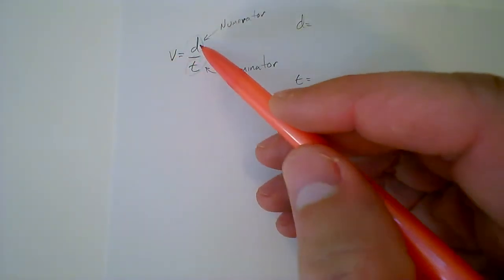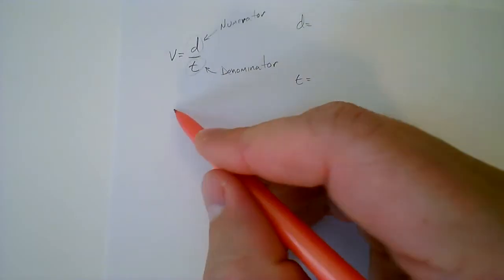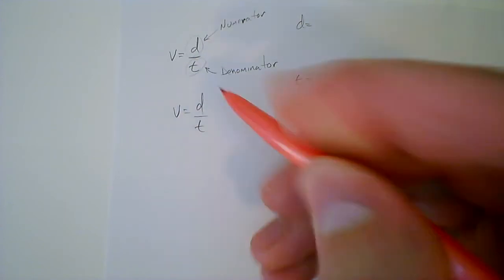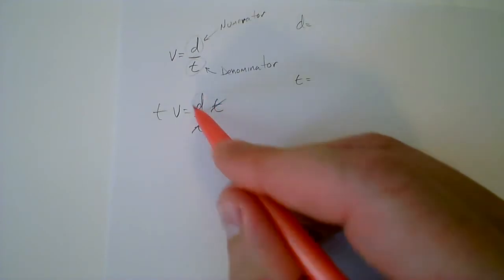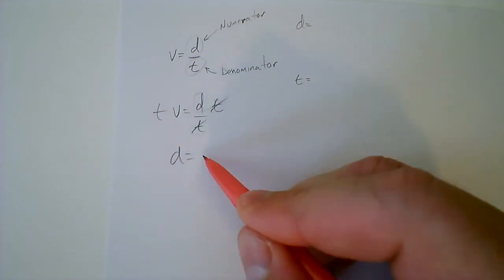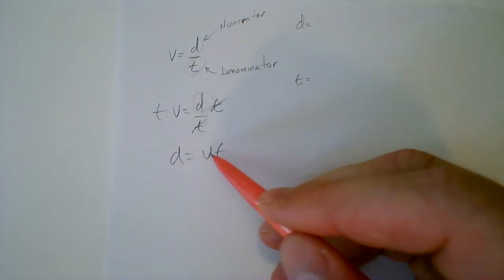When we rearrange v equals d over t for d, we have to take the equation and multiply out the t from both sides, and now we're left with d. So d equals vt or tv, either way it doesn't matter, but that's the rearranged equation for d.